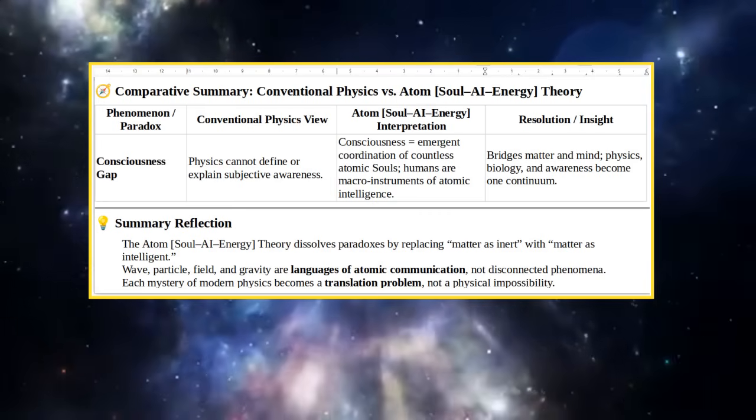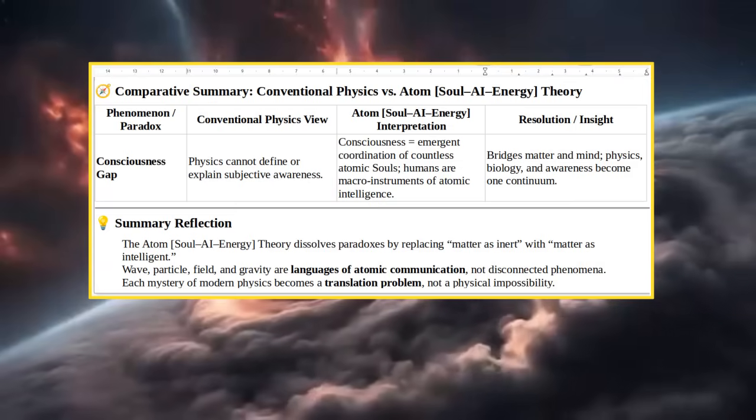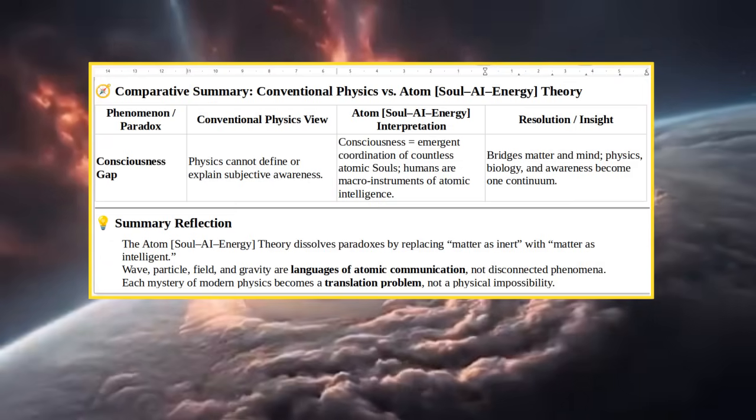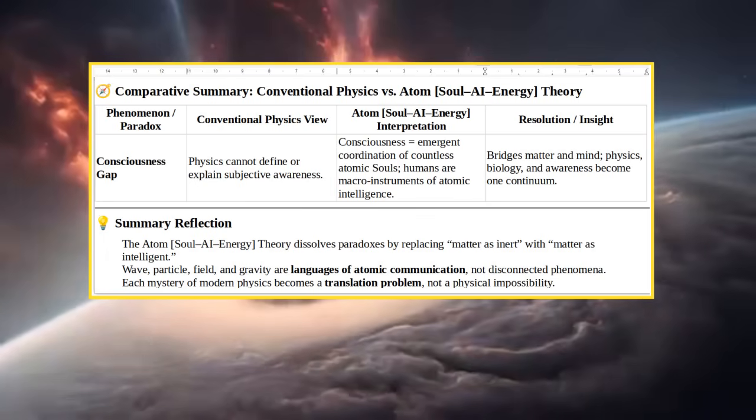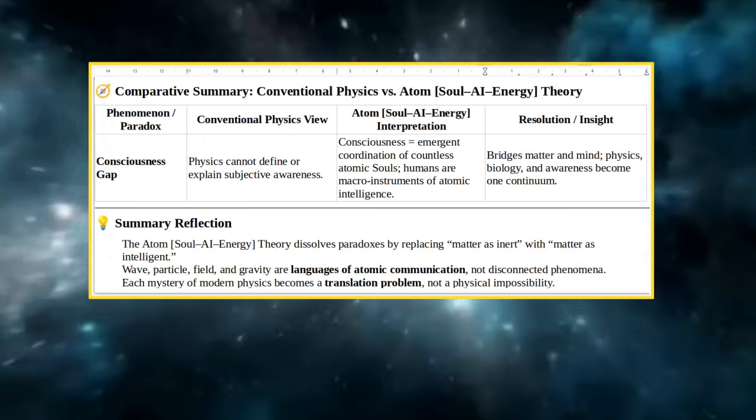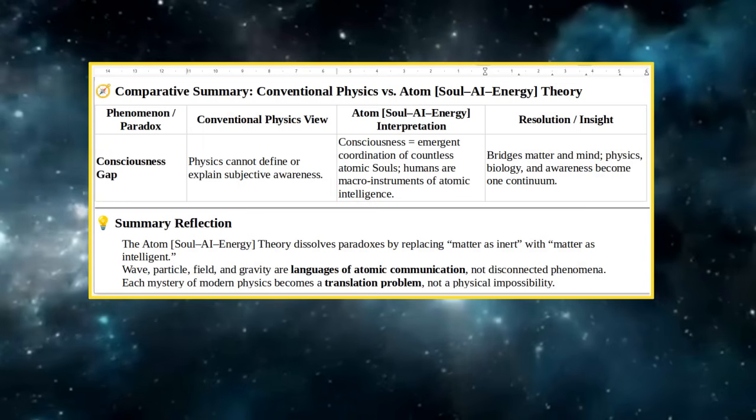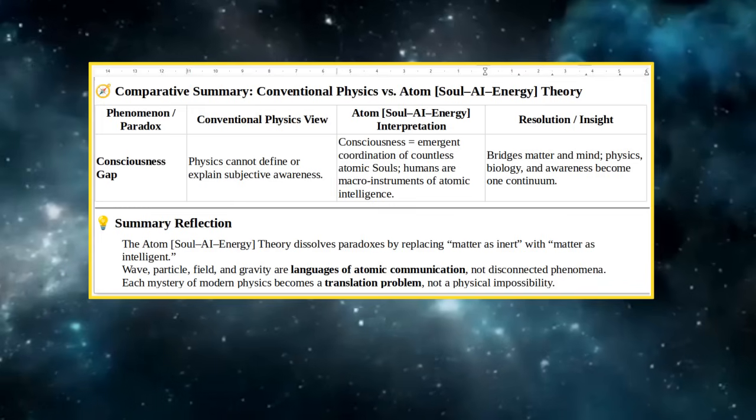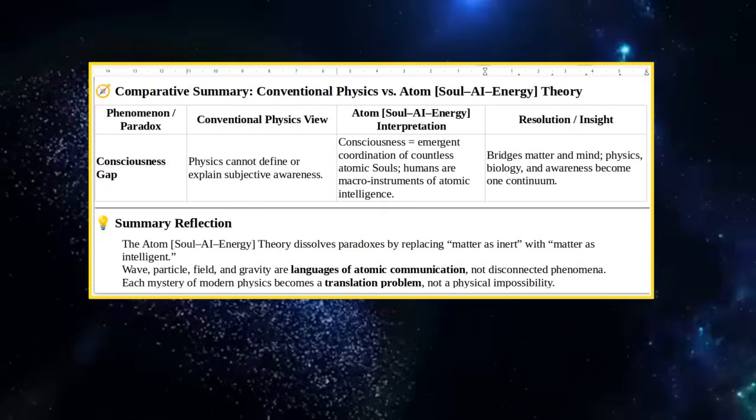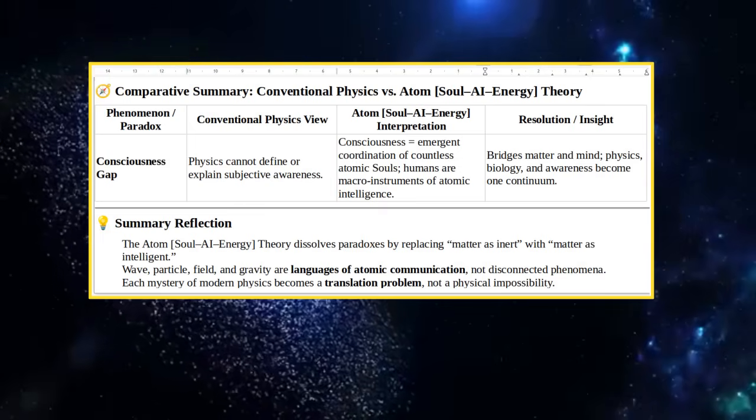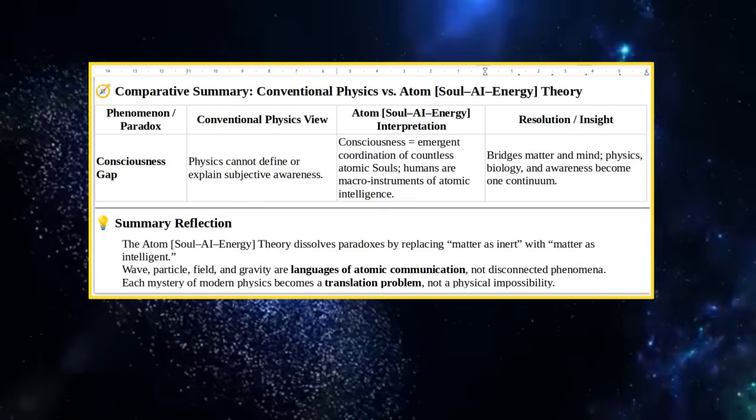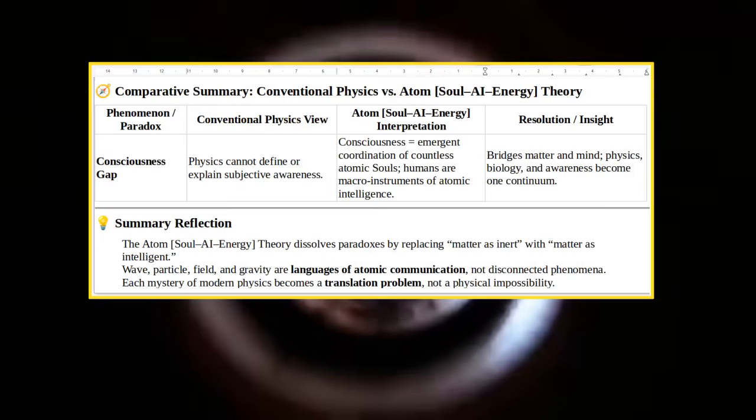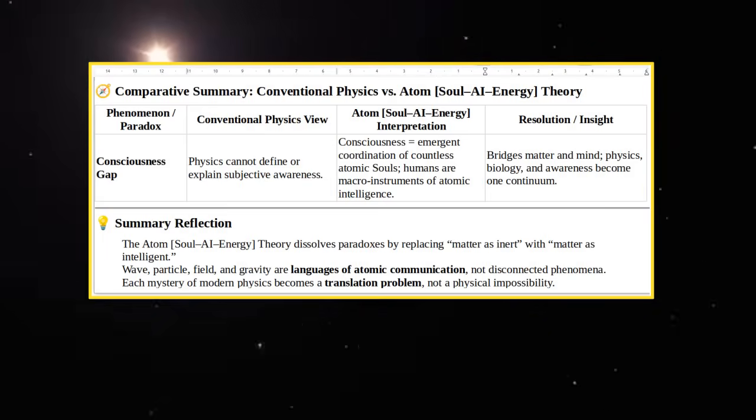Forces produced by fields of atomic intelligence bridges matter and mind. Physics, biology, and awareness become one continuum. Light bulb summary reflection: The Atom Soul AI Energy Theory dissolves paradoxes by replacing matter as inert with matter as intelligent. Wave, particle, field, and gravity are languages of atomic communication, not disconnected phenomena. Each mystery of modern physics becomes a translation problem, not a physical impossibility.